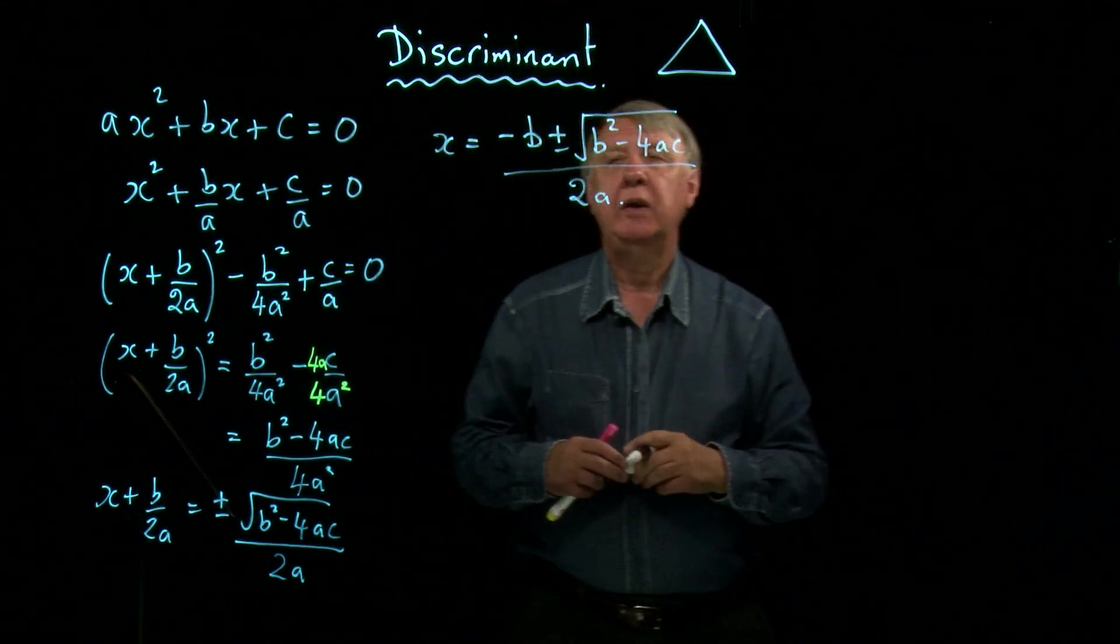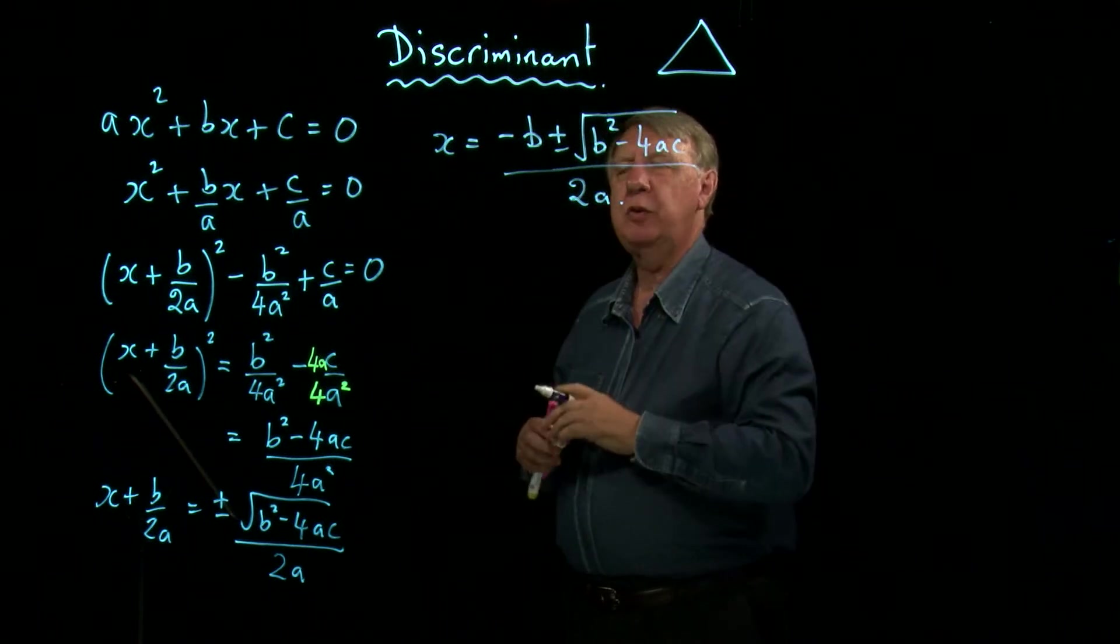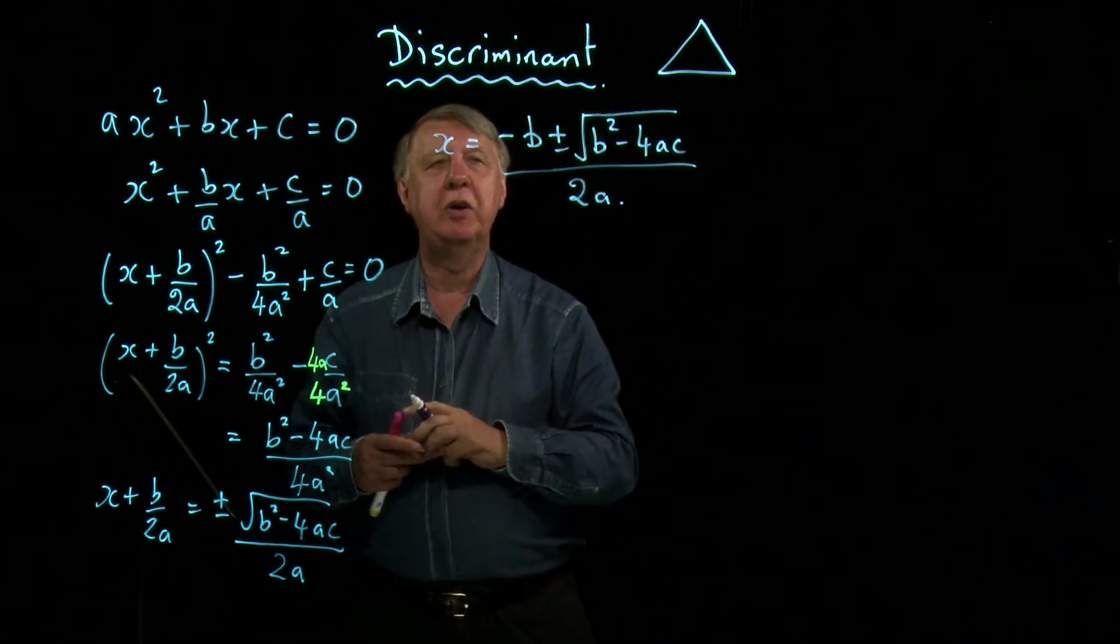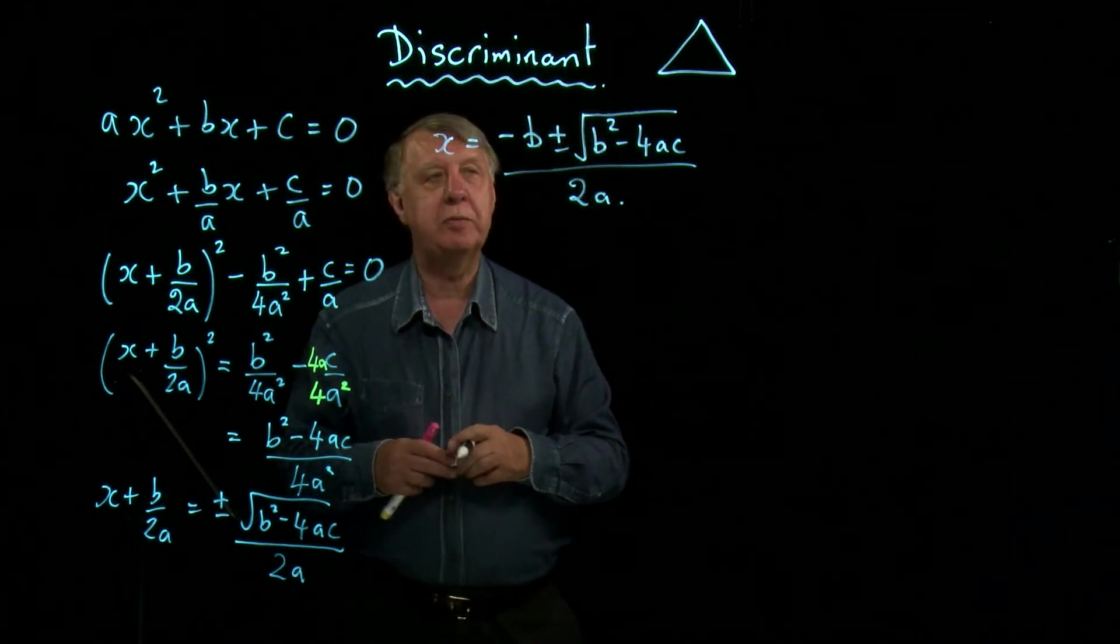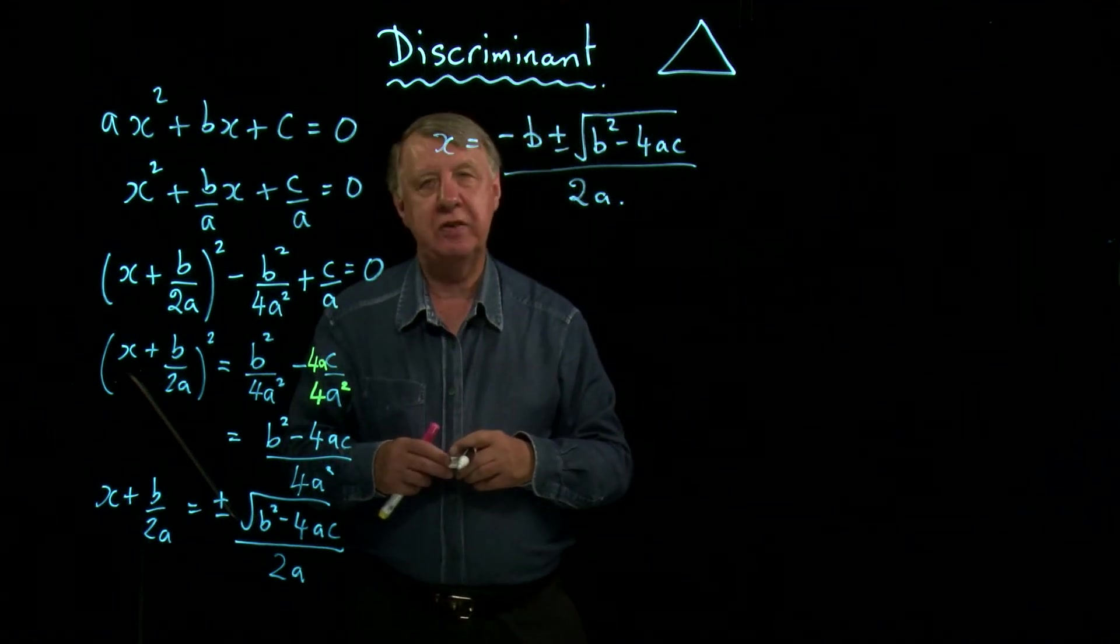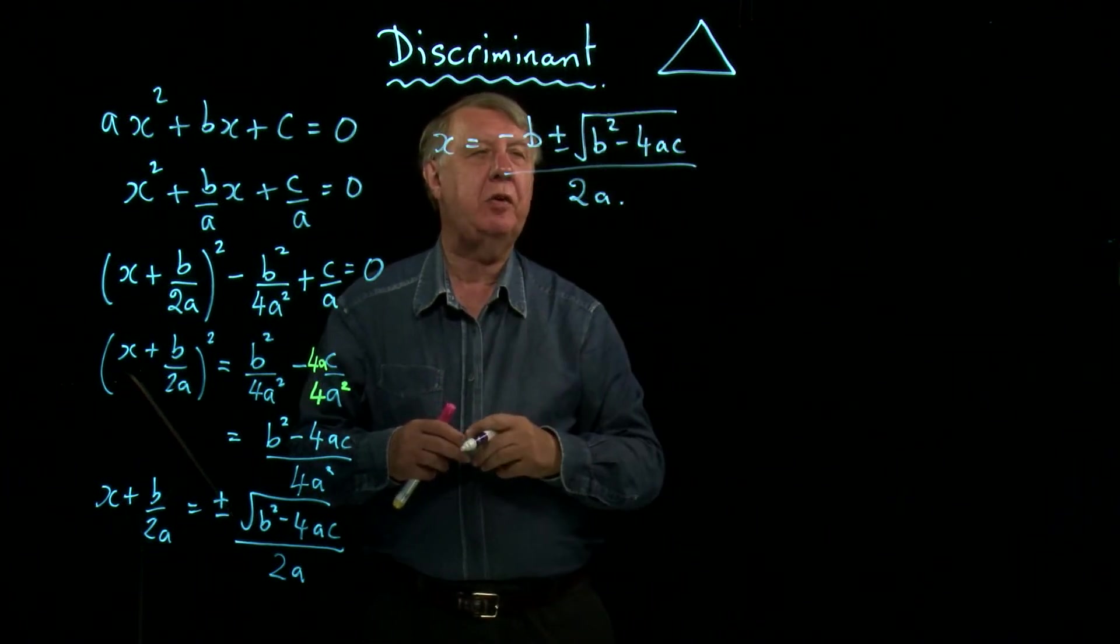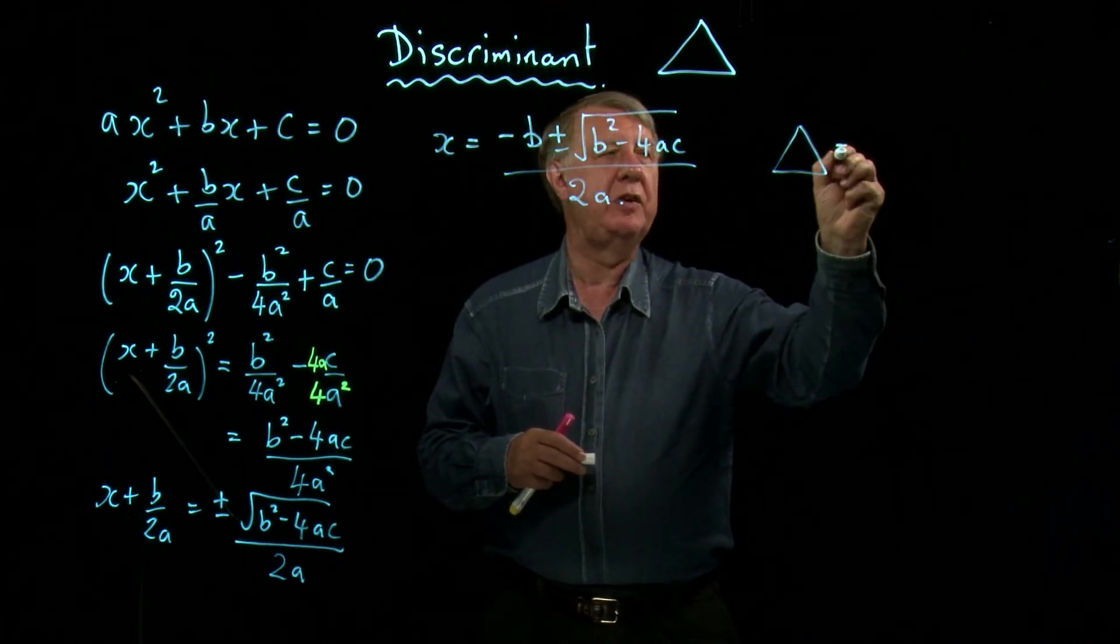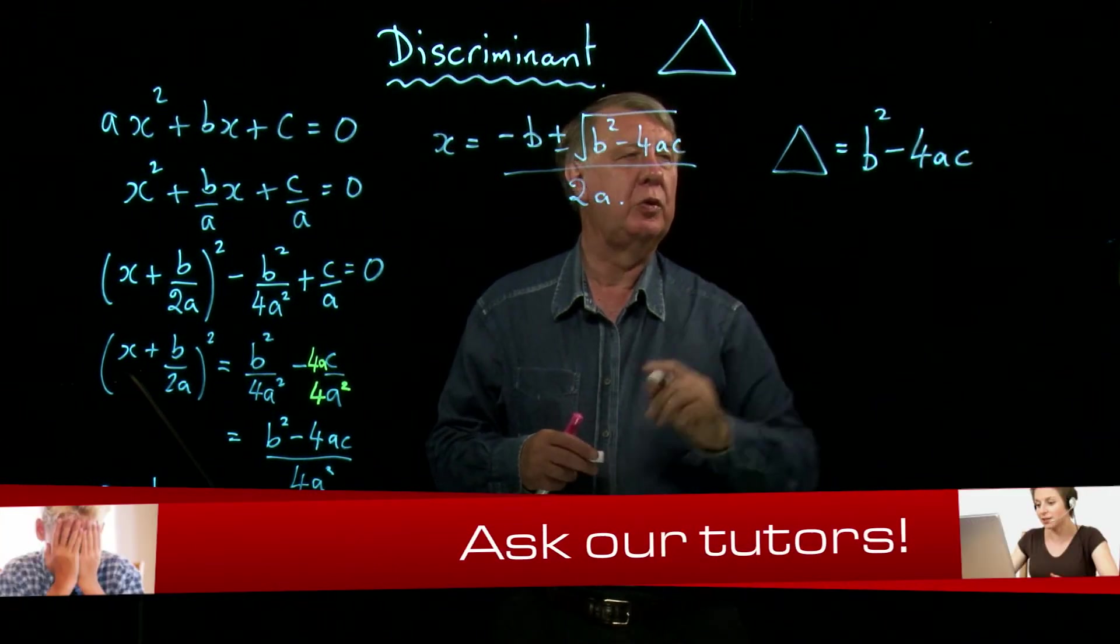Now of course in core 1, you're not allowed a calculator. So what are the sort of questions that they're going to ask you with reference to that formula? Because you can use it and leave surds in your answer, but you can't work out any decimal answers. But that's not the thing in core 1 that they're actually particularly interested in. Now this quantity here, b squared minus 4ac, is what we call the discriminant. So delta, the discriminant, is equal to b squared minus 4ac.